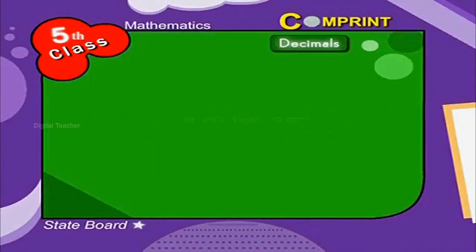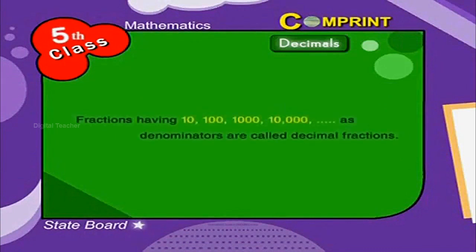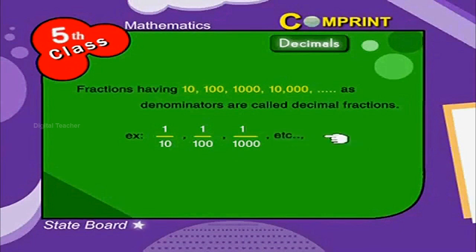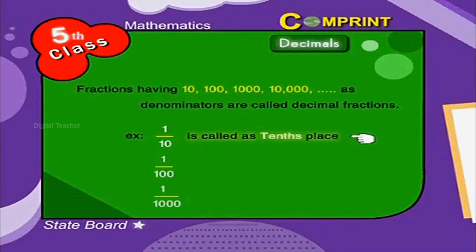Decimals: Fractions having 10, 100, 1000, 10,000 and so on as denominators are called decimal fractions. For example, 1 by 10, 1 by 100, 1 by 1000 and so on. 1 by 10 is called the tenths place.